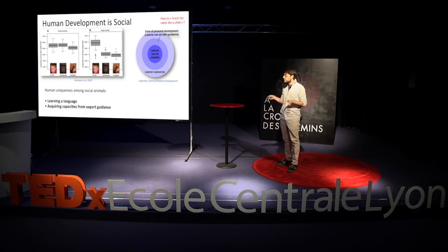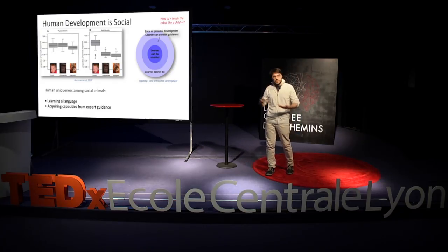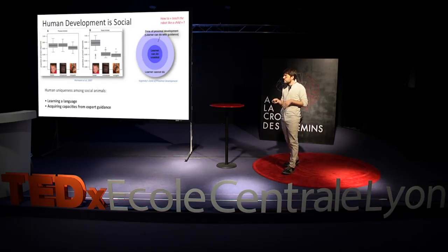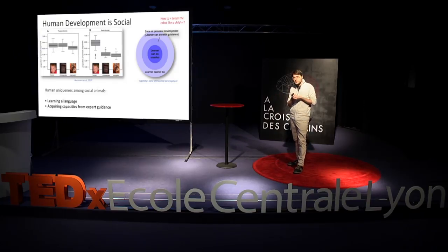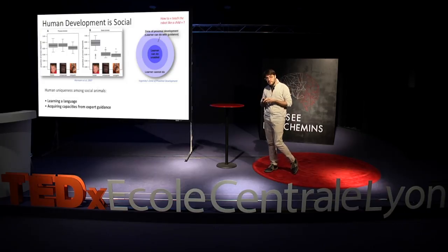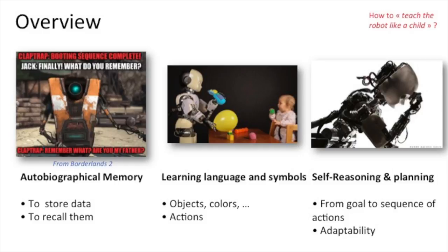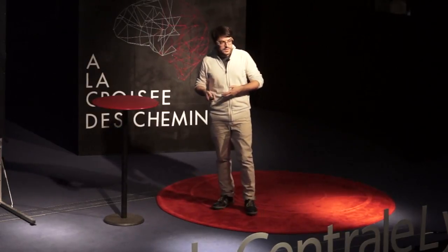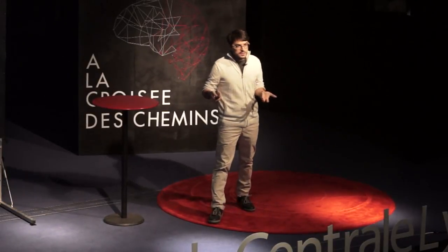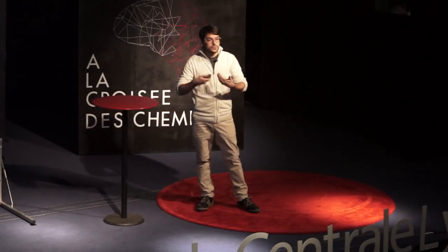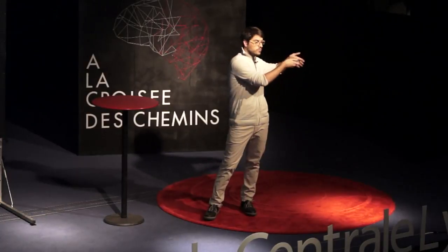That's what makes humans very unique among social animals. We learn a language and we are able to communicate with others, and others take care of the children. Children can then acquire capacities not from random movement but from learning from experts, from their guidance. What do we need to build that inside a robot? First, we need memory — the robot must not forget everything. Then we need language learning to communicate with humans, learn objects and concepts like colors, and learn different actions. Finally, we need self-reasoning or planning: the ability to use all acquired knowledge, apply it to a problem, and create a sequence of actions to go from point A to point B.